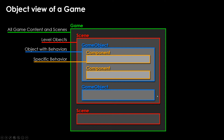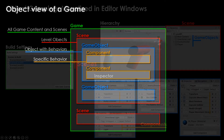Our game can have several scenes, and our scenes can hold several game objects — like anything in our world that we're playing, like enemies, environment, lights, cameras, and all that other stuff. Each of those objects will have components that give it behavior.